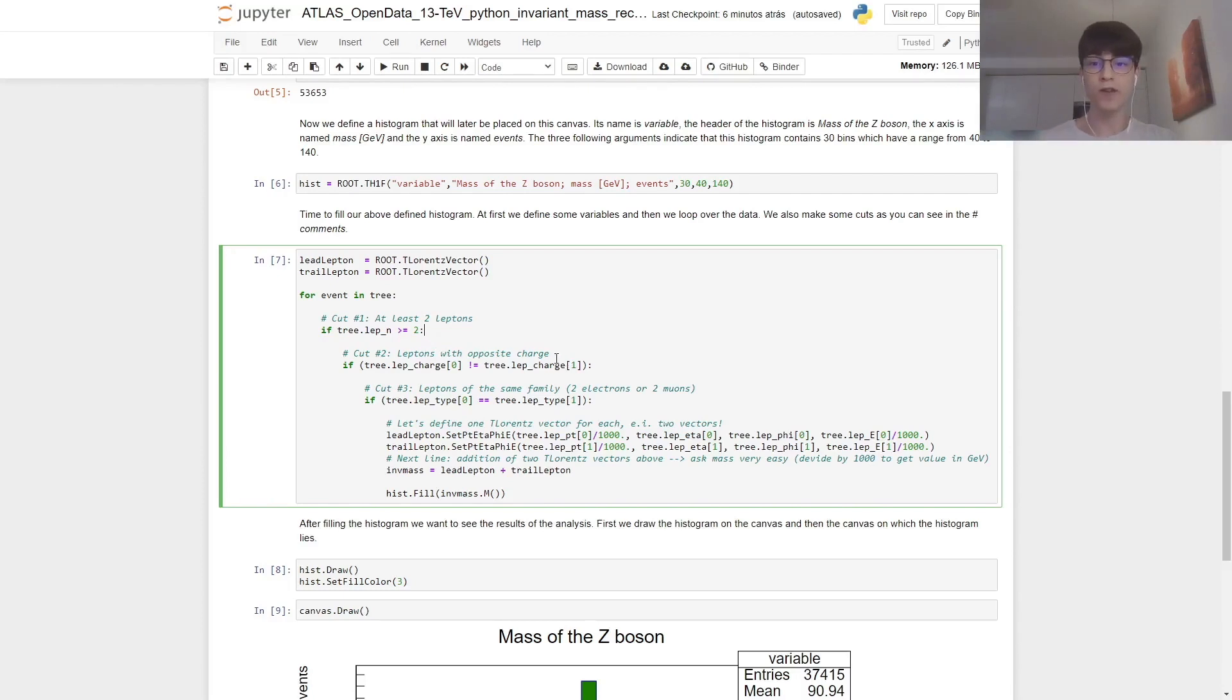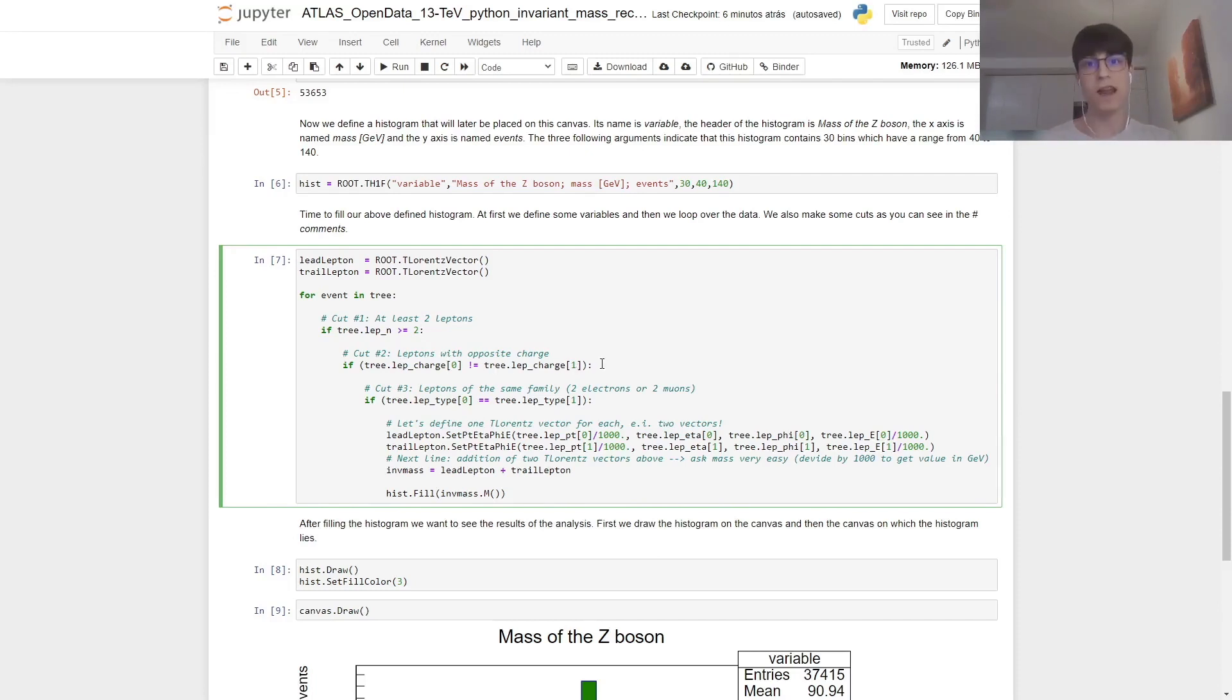With our second cut, we're going to ensure that the leptons have opposite charge. So if the charge of the first lepton is different from the charge of the second lepton, then we pass on the data. We then go to our final cut, which is to ensure that both leptons have the same flavor. So if the type or flavor of the first lepton is equal to the type or flavor of the second lepton, we can pass on the data.